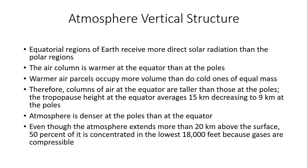Warmer air parcels are going to occupy a greater volume than cold ones of equal mass. When you have a warmer air parcel column, the molecules move around much more rapidly — they expand and become much further apart — compared to cold columns of air over polar areas, where molecules are packed much more tightly together and the air column is shorter. So, warmer air parcels expand and occupy more volume, meaning columns of air at the equator are going to be taller than those at the poles.